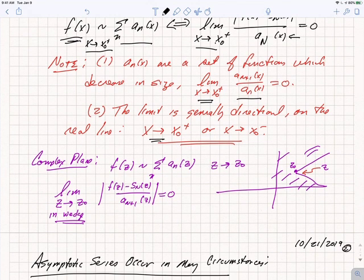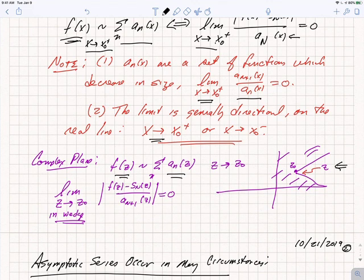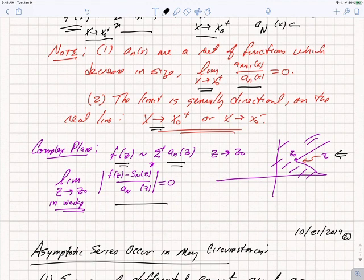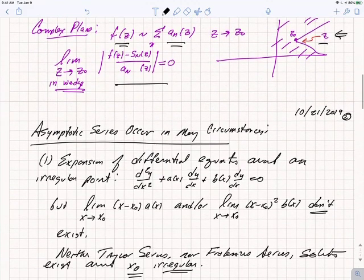This has a nice generalization in the complex plane. We will sometimes be interested in asymptotic series where f of z is asymptotic to the sum of a_n as z goes to z_0. In the complex plane, we talk about the range of validity of the asymptotic series as being a wedge in the complex plane. The same condition holds — the difference between f of z and the partial sum divided by the last term goes to 0 as z goes to z_0 within the wedge.